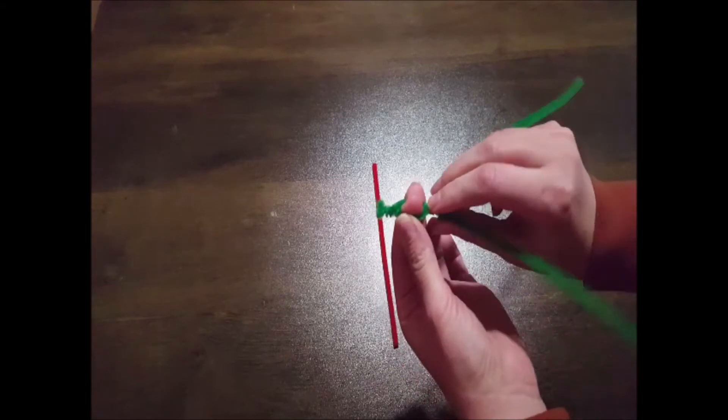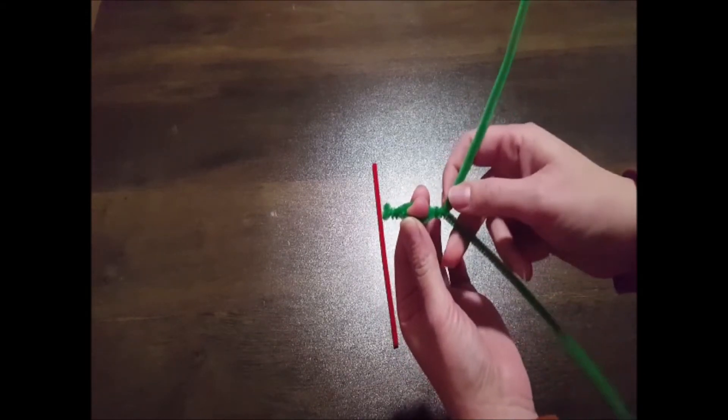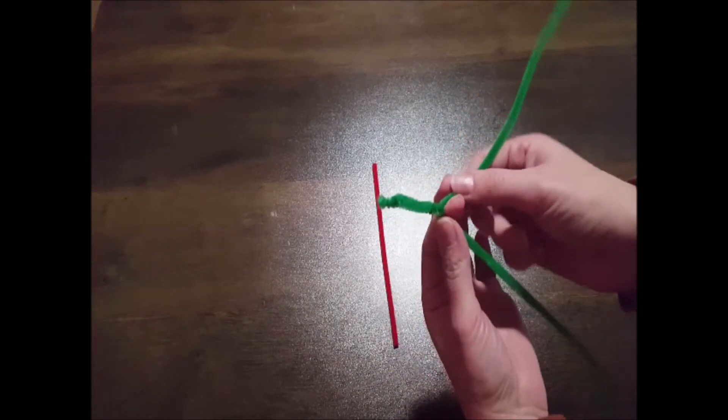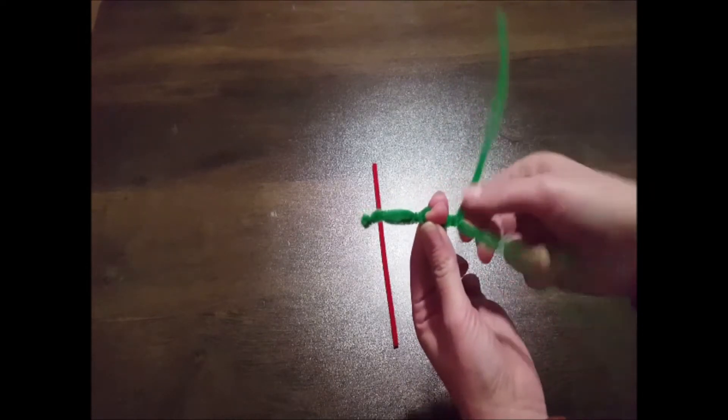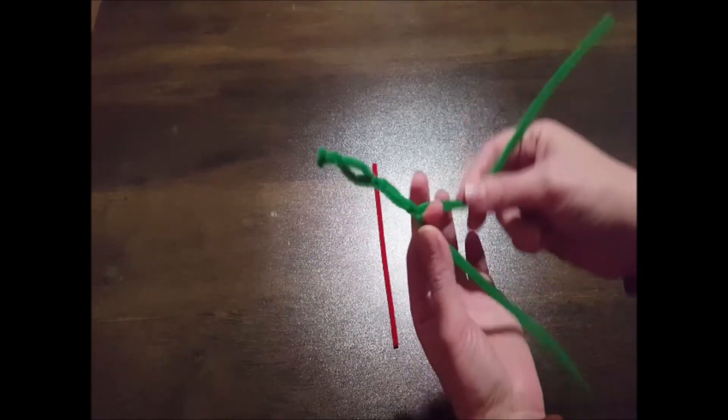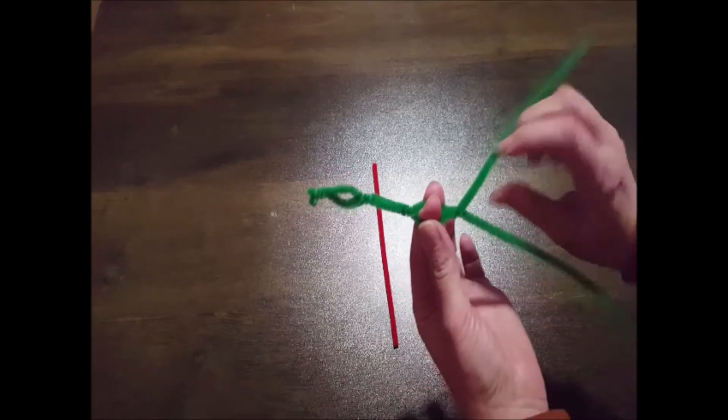Twist the green pipe cleaner around your index finger two or three times. This way you will have a loop that should hold its shape. You're going to continue this along the entire length of your two pipe cleaners until you get your completed wreath.